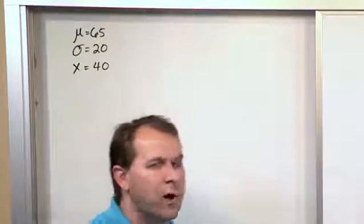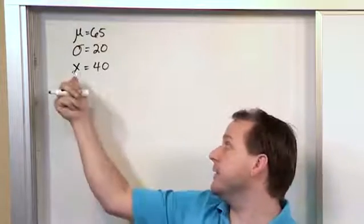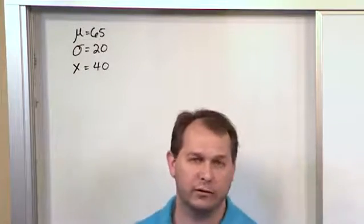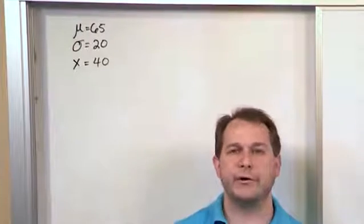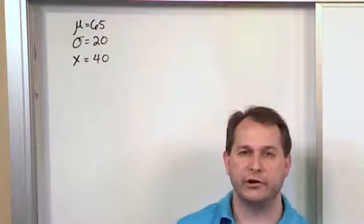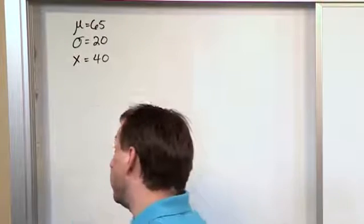What I want to do is draw the original distribution, including the area of interest at 40 that we are looking at, and then we want to convert it to the standard normal and show where that value lies on the new distribution. So that's what we want to do.